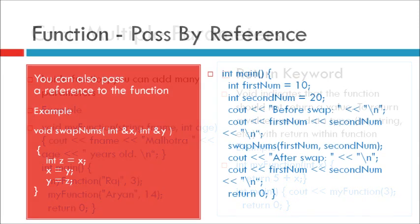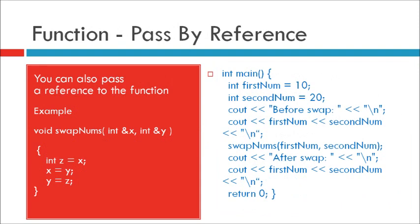C++ functions pass by reference. In the examples from the previous slide, we used normal variables when we passed parameters to a function. You can also pass a reference to the function. This can be useful when you need to change the value of the arguments. Now see the example.